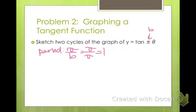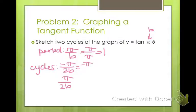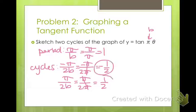And then to find our cycles, we do negative π over 2b and positive π over 2b. And we have to figure out where the end and where the beginning is. So negative π over 2 times π, those cancel, so we get negative 1 half. And then π over 2 times π, those cancel, positive 1 half. So our cycle is from negative 1 half to positive 1 half. Our period is 1.